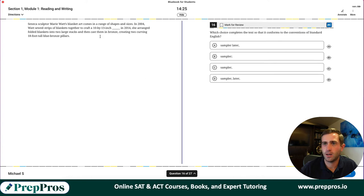Cool conventions again, most likely testing us on sentence structure with the use of a semicolon in there. Seneca sculptor Marie Watts blanket art comes in a range of shapes and sizes. In 2004, Watts sewed strips of blankets together to craft a 10 by 13 inch sampler, independent clause. Here's our transition with the comma. If we have another independent clause, we have to put that semicolon. She arranged folded blankets into two large stacks and then cast them in bronze creating two. The SAT loves those participle phrases. We're going to have to use the semicolon here. Everything else would end in a run-on sentence.